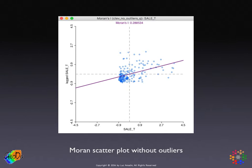On the horizontal axis we see the standardized value of the sales price — standardized so the mean becomes zero and the standard deviation is one, so units are in standard deviations. On the vertical axis is the spatial lag of each observation. The linear fit through these points has a slope of 0.288534, as shown at the top of the graph. This is a screenshot from GeoDa.